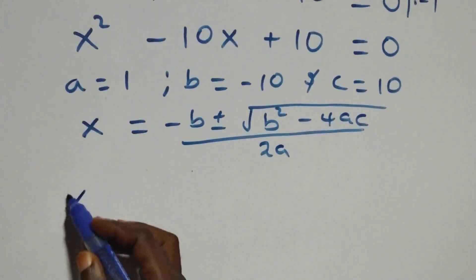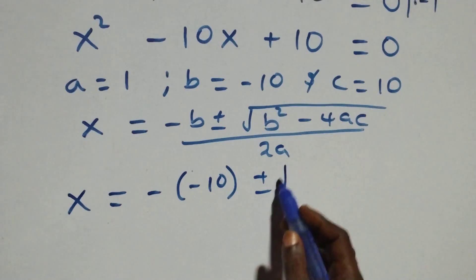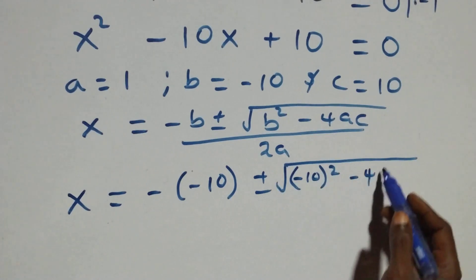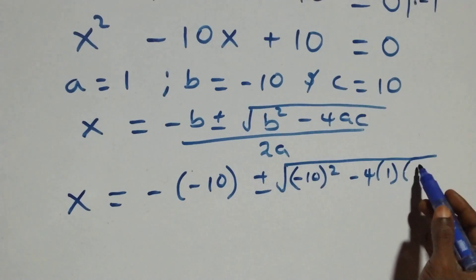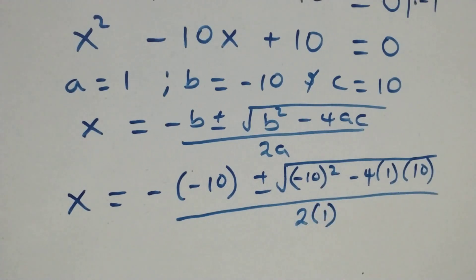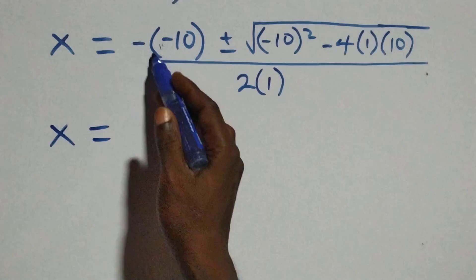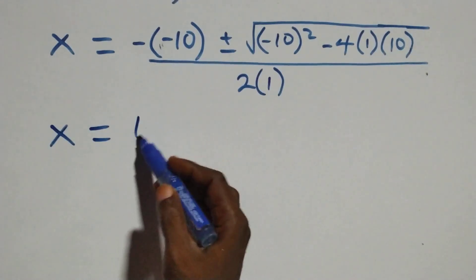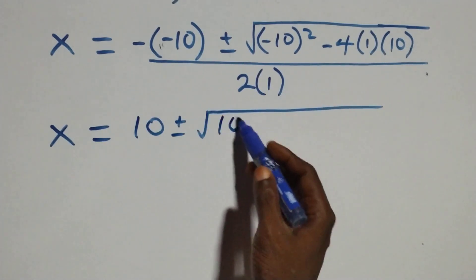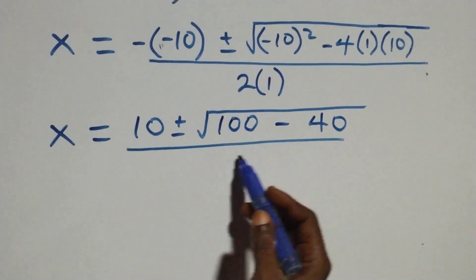Substituting the values, x equals to minus (minus 10), plus or minus square root of minus 10 squared minus 4 times 1 times 10, then over 2 times 1. That gives us 10, plus or minus square root of 100 minus 40, over 2.